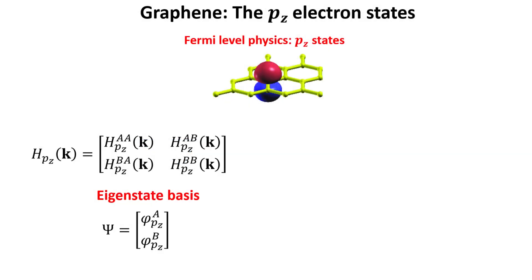To this end we write down the block Hamiltonian for the pz states in graphene as shown above. Note that the pz Hamiltonian is a two by two matrix. This is because graphene possesses a basis of two atoms which we label A and B atoms. The basis is also shown here where the first component of the eigenstate corresponds to the amplitude of the pz state in the A atom and the second component corresponds to the amplitude of the pz state in the B atom.